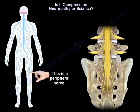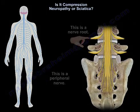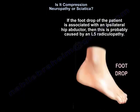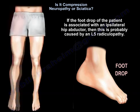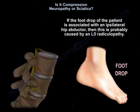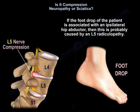This is the peripheral nerve and this is the nerve root. So if the foot drop is associated with an ipsilateral hip abductor weakness, then this is probably caused by an L5 radiculopathy.